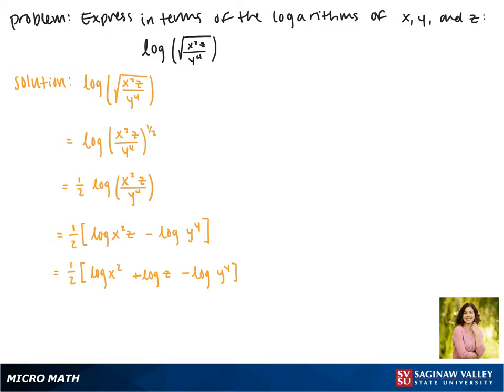Now we'll rewrite each term that has an exponent with its exponent out front, so this becomes one-half times two times the log of x plus the log of z minus four times the log of y.